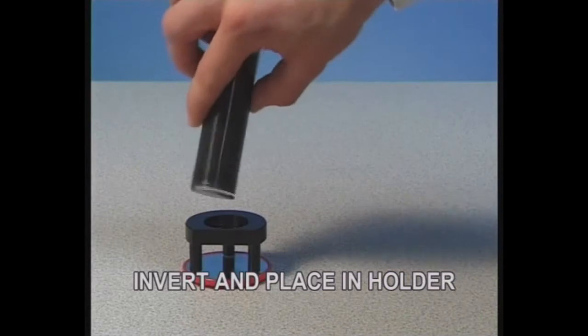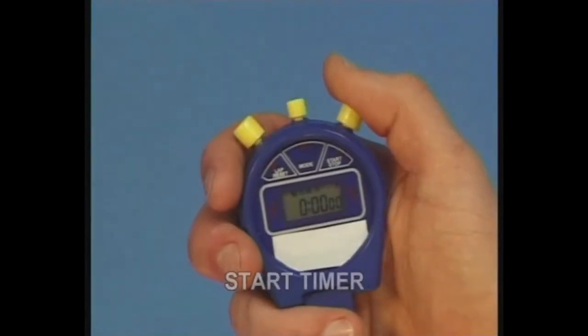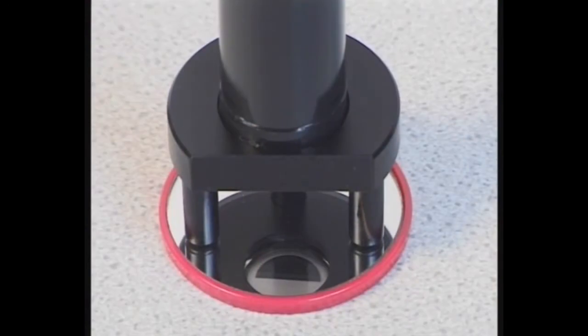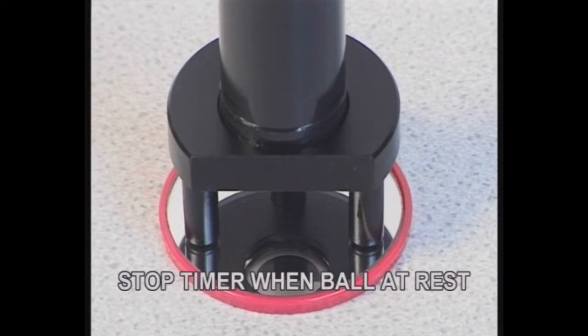Invert the visco tube, place in the holder and start the timer. By observing the visco tube in the mirror, stop the timer when the ball comes to rest. Record the time.